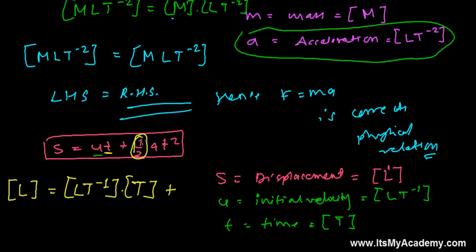Now dimension of A, that is LT^-2. So let me write LT^-2 times square bracket T squared. In the left-hand side we are getting L only, and in the first term of the physical relation we are getting L.